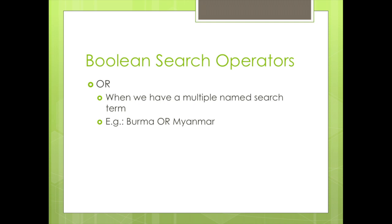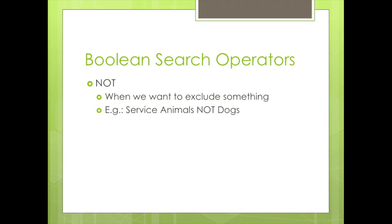Finally, NOT is used when you want to exclude something. If you're writing an article about service animals that are not dogs, you would use service animals, capital N-O-T, dogs. As you can see here, none of these results have the word dog in the headline. That doesn't mean that the article might not include the word dog, though, so you need to read your results carefully.